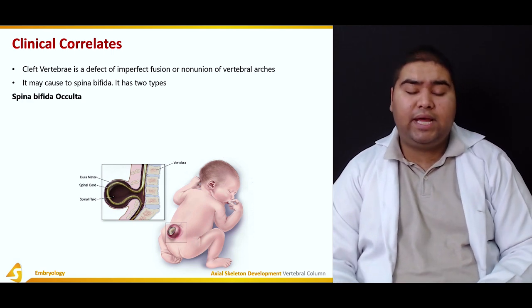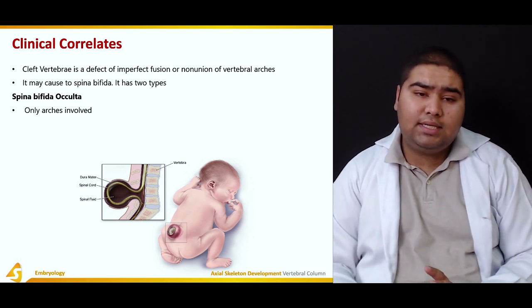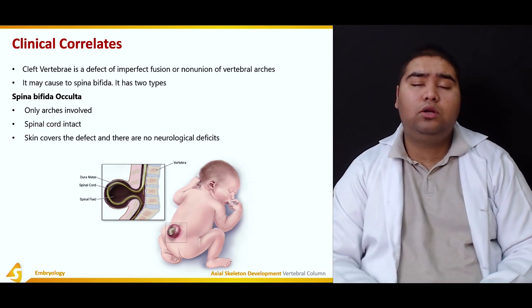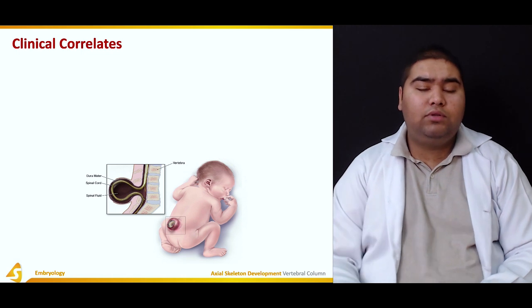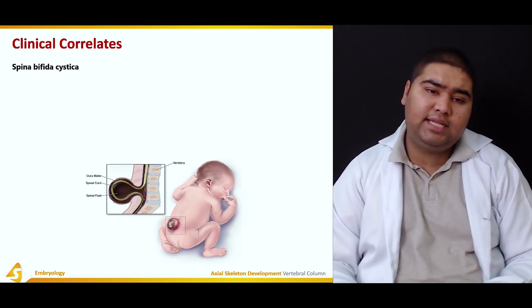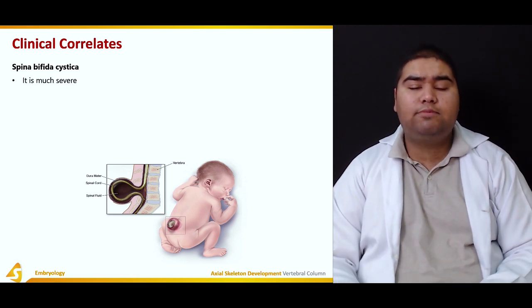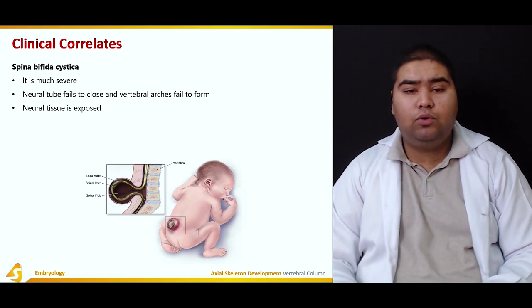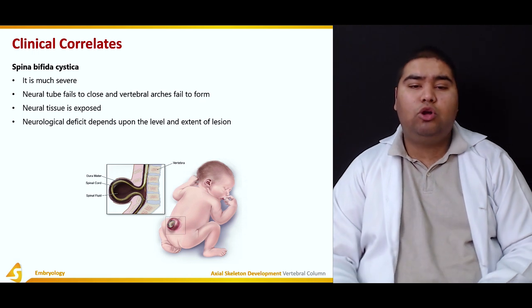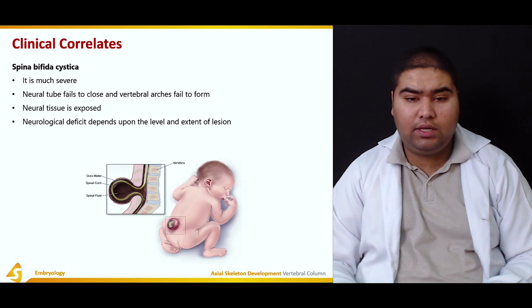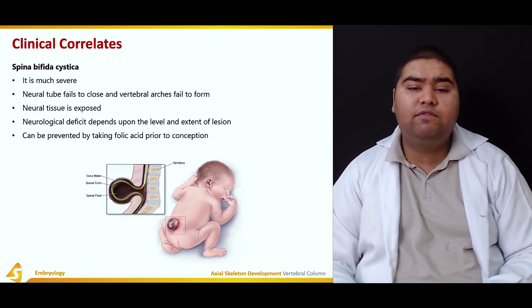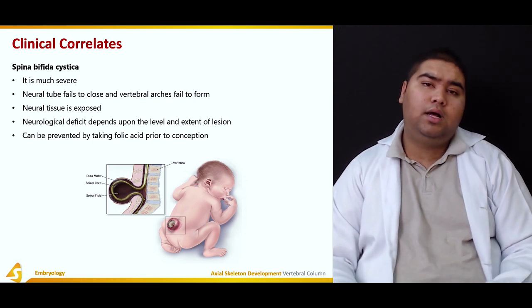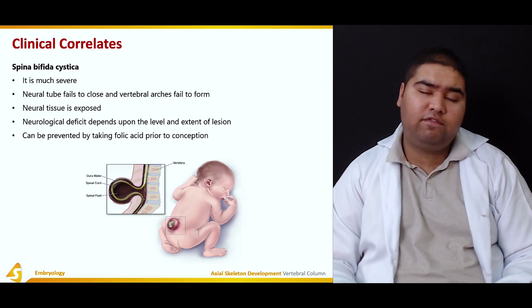There are two types of spina bifida. Spina bifida occulta is the condition in which only the vertebral arches are involved; the spinal cord is intact, the skin covers the defect, and there are no neurological deficits. The second type, spina bifida cystica, is much more severe: the neural tube fails to close and the vertebral arches fail to form, exposing neural tissue. Neurological deficit depends on the level and extent. It can be prevented by taking folic acid prior to conception, as folic acid aids in neural tube formation.